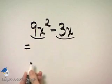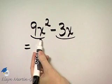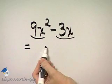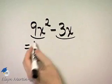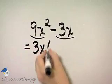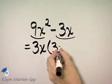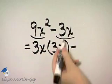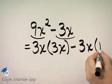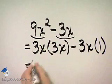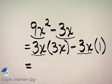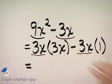Now if you need to, you can rewrite each term as the factor 3x times some other factor. In other words, 9x squared is 3x times, it just so happens, 3x minus this term 3x is 3x times 1. And notice then you can see that common factor of 3x in these two terms.